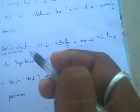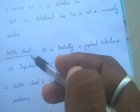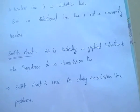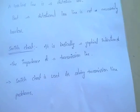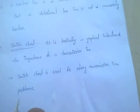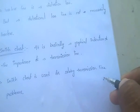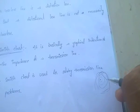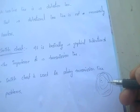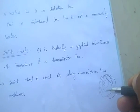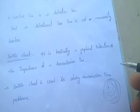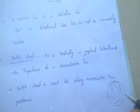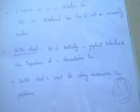Next topic: the Smith chart. It is basically a graphical indication of the impedance of a transmission line. This Smith chart is used for solving transmission line problems — it is a graphical representation of impedance lines of a transmission line.